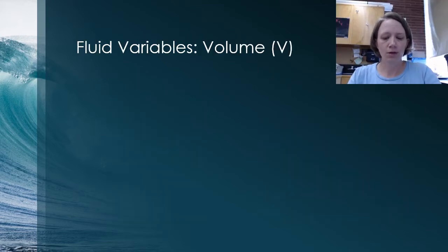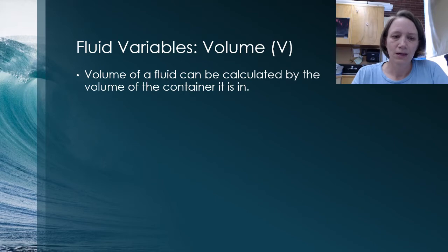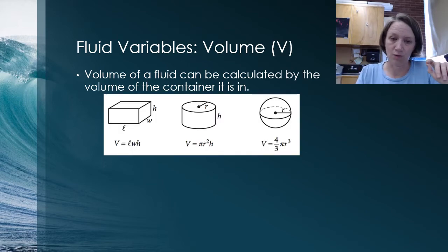So before we get going too far into physics, we need to define some variables. Most of these you'll have heard of before, but it's always good to know what the precise physics definition is and what units and symbols and things we're going to use. So the first variable is volume, capital V. I'm sure you use that in chemistry, if you took chemistry. And if not, you probably saw it in middle school. The volume of a fluid is easy to calculate because since it fills the container it's in, you can just calculate it based on the volume of the container.